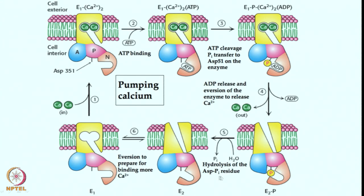Both ATP release and evasion of the enzyme happen to release calcium. This enzyme helps pump calcium from inside the cell to the outside. Hydrolysis of the aspartate phosphate residue also takes place, wherein water assists in dephosphorylation reactions — getting the enzyme ready once again to bind calcium. Evasion happens again to prepare binding of more Ca2+ into this pocket, and the process continues. It is almost a catalytic cycle, pumping calcium from inside to outside by this ATP-driven process.